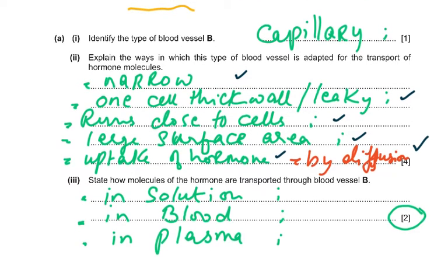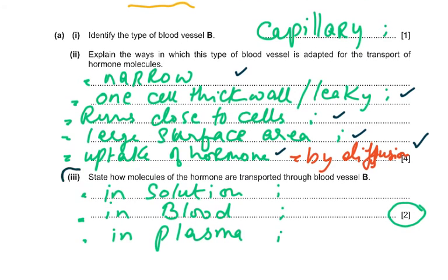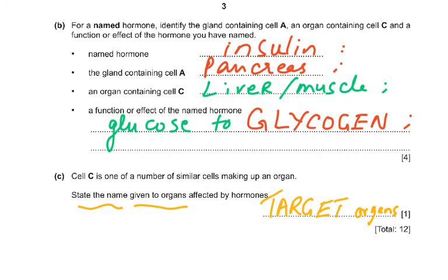Part 3 asks how molecules of the hormone are transported through blood vessel B — simple but easy to miss in an exam. They are transported in solution in the blood plasma. You could write: hormones are transported in the blood plasma as a solution, and you would get two out of two marks.